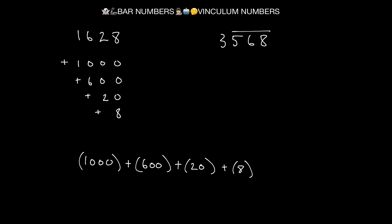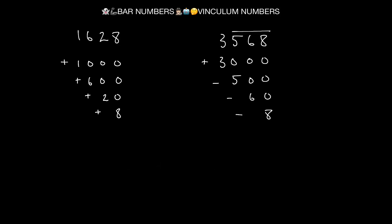How this differs from a bar number is a bar number is saying that whatever this bar is over, these are going to be negative. So you start off with a positive 3,000 — because that doesn't have a bar over it — and then we subtract 500, we subtract 60, and we subtract 8.